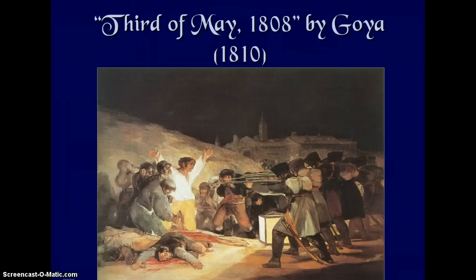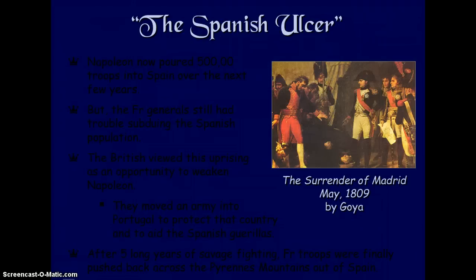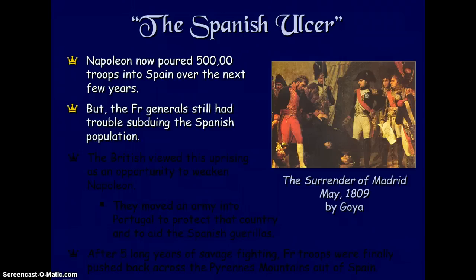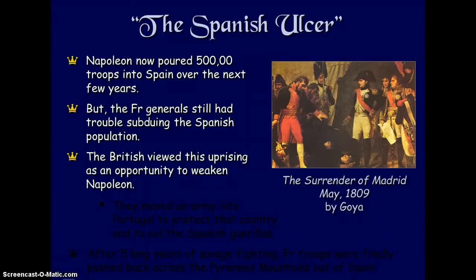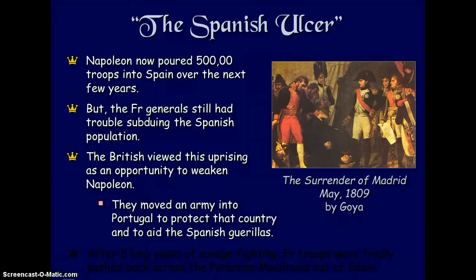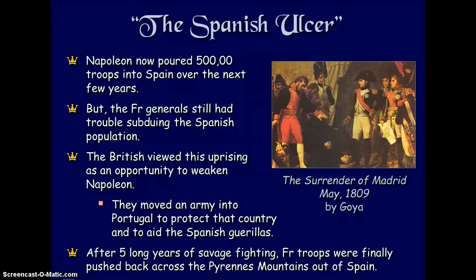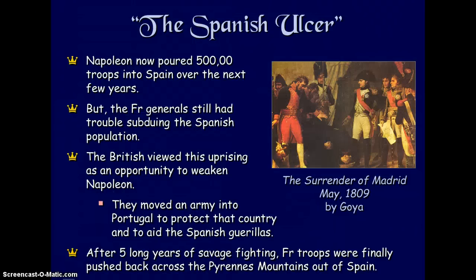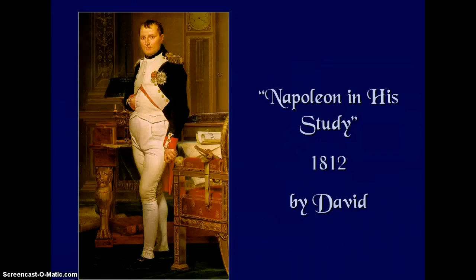Napoleon poured 500,000 troops into Spain over the next few years, but French generals still had trouble subduing the Spanish population. The British viewed the uprising as an opportunity to weaken Napoleon, moving an army into Portugal to protect that country and aid Spanish guerrillas. After five long years of savage fighting, French troops were finally pushed back across the Pyrenees Mountains.